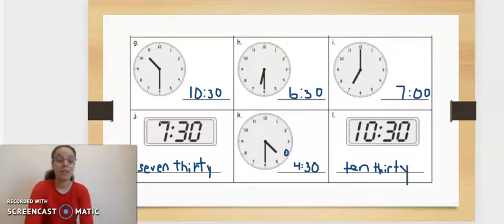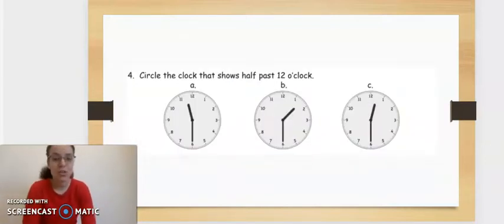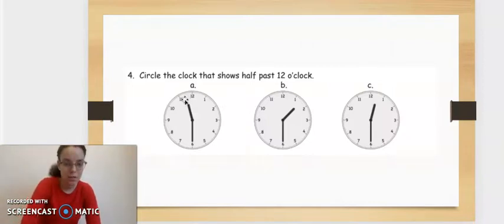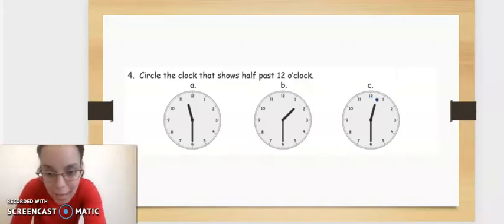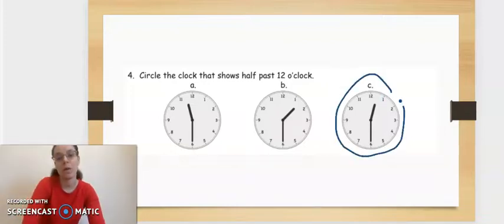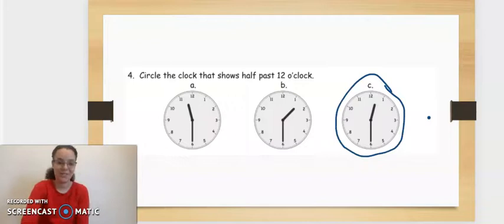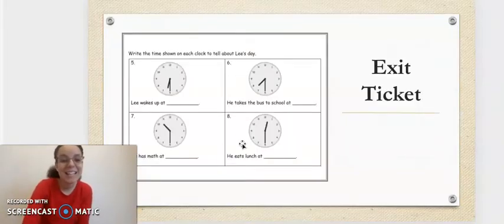Circle the clock that shows half past 12. Half past 12. If it's half past the 12, it means it's past the 12. Is it past the 12 here? No, it's past the 11. So that's 11:30. Is it past the 12? It's halfway past the 12 and almost at the 1. So this neat one is 12:30.